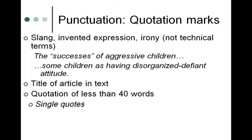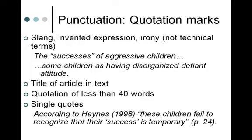Use single quotes when you have a quote where the author is quoting something — so you're quoting something and what you're quoting had a quote inside it. Double quotes on the outside, single quotes on the part they quoted. For example: According to Haynes (1998), these children failed to recognize that their 'success' is temporary. Haynes had 'success' in double quotes in the original article on page 24, likely to indicate irony. When it comes into your paper as a quote-within-a-quote, it turns to single quotes.